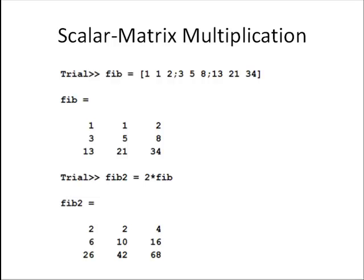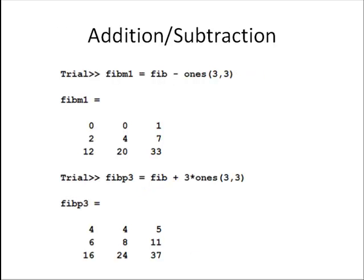Scalar matrix multiplication. Here's a matrix called Fib. You'll notice it's full of Fibonacci numbers. If we want to multiply each element in the matrix by 2, the command is simply 2 times Fib. We see the result is each element multiplied by 2.